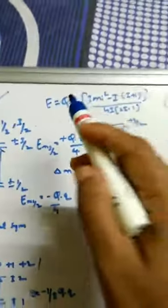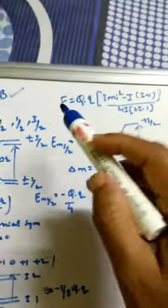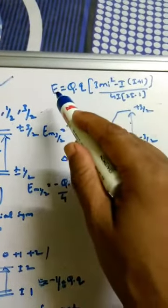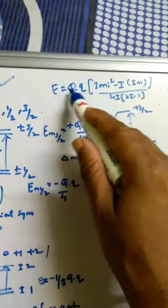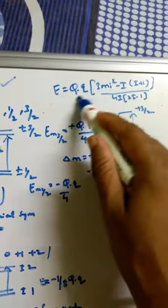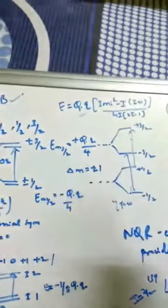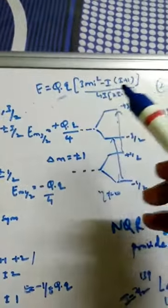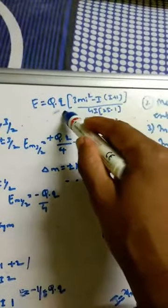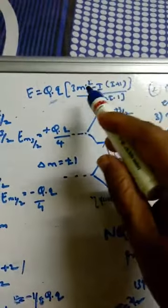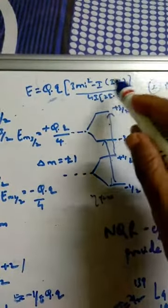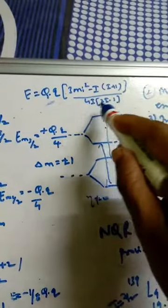This equation, given in the last video, shows how the energy level is calculated: it is eQq — where Q is the quadrupole coupling constant with the electric field constant — times (3mI² − I(I+1)), divided by 4I(2I−1). This is the energy level equation used in NQR.